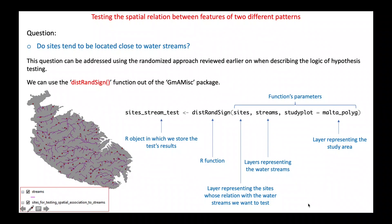The function that we are going to use is named distRandSign, which stands for Distance Randomized Significance. We will be using the function to test if some fictional archaeological sites in Malta are located close to fictional water streams. In order for the function to work, we have to feed some data into the function — in our terminology, those data are called parameters. The first parameter is a point vector layer representing site locations. The second parameter is a polyline vector layer representing water streams. The third parameter is a polygon vector layer representing the study area — Malta in this case.